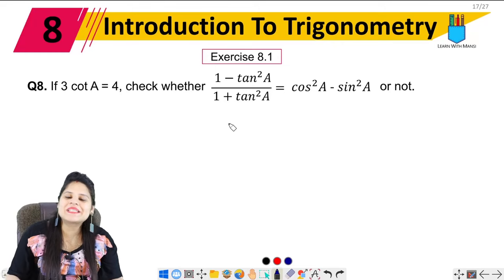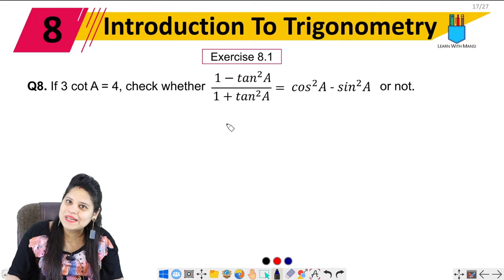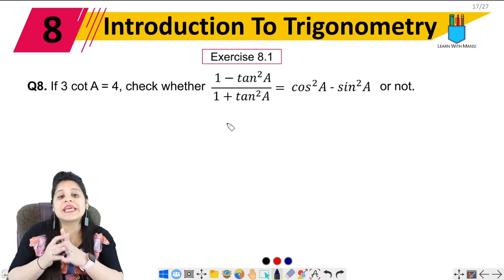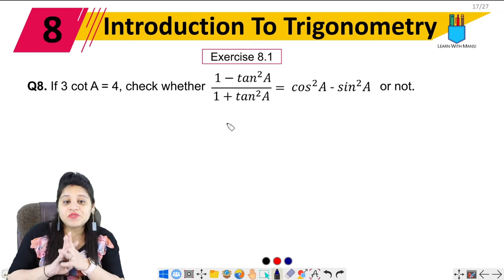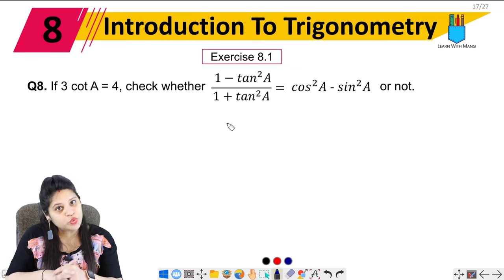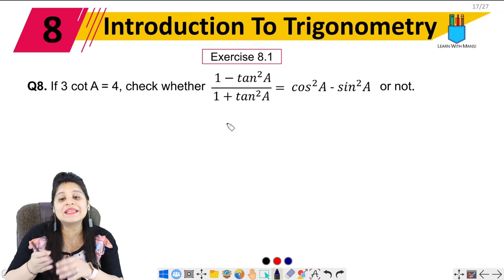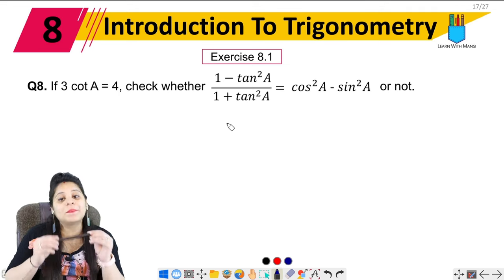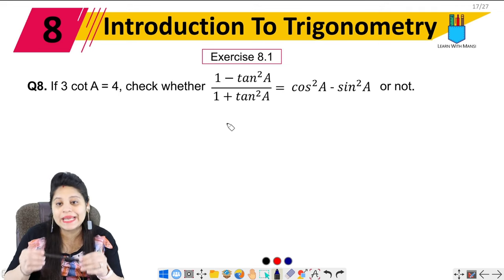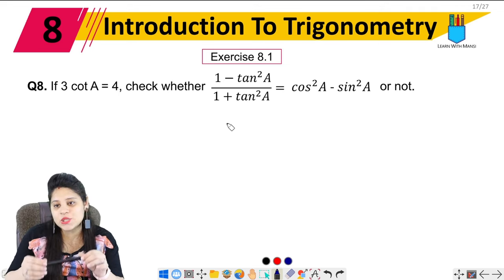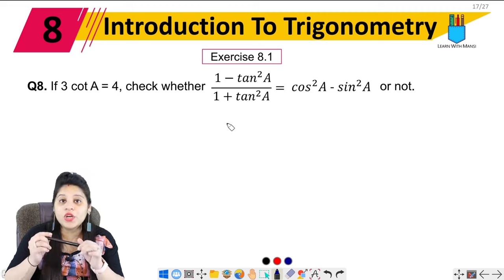Hello my lovely students, this is Mansi. Welcome back to the channel. Now we are on the 8th question of Exercise 8.1. The question says: if 3 cot A equals 4, check whether (1 minus tan²A) upon (1 plus tan²A) equals cos²A minus sin²A or not.